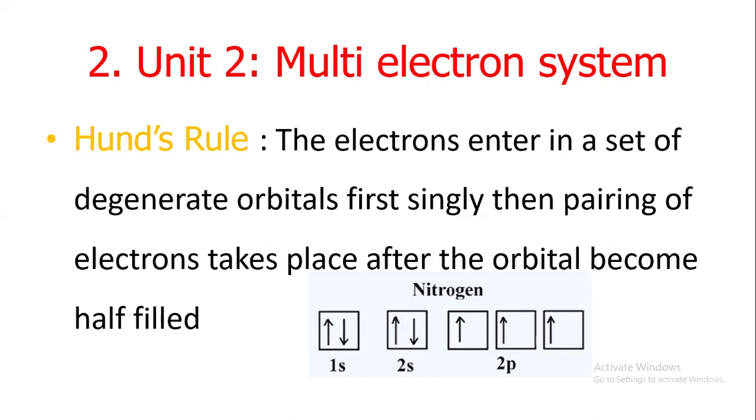The electrons enter in a set of degenerate orbitals first singly, then pairing of electrons takes place after the orbital becomes half filled.